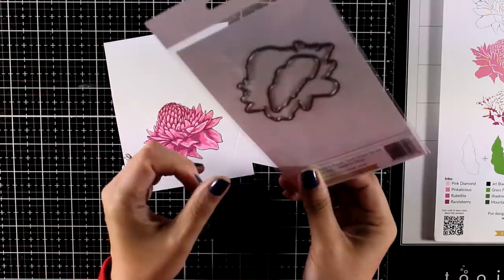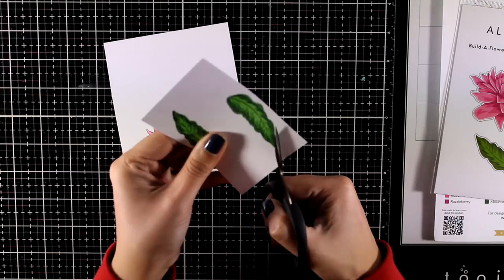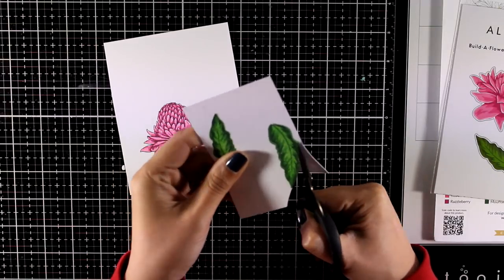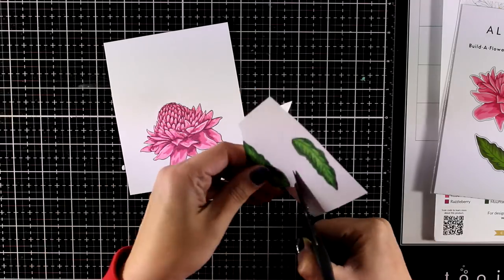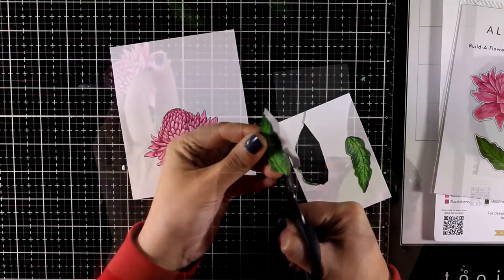Now that I have everything stamped, I can use the matching dies to cut them out. However, I prefer to use my scissors and fussy cut them since I don't like to have that white border around them when it comes to my art journaling. If this was a card, I would definitely use the matching dies.